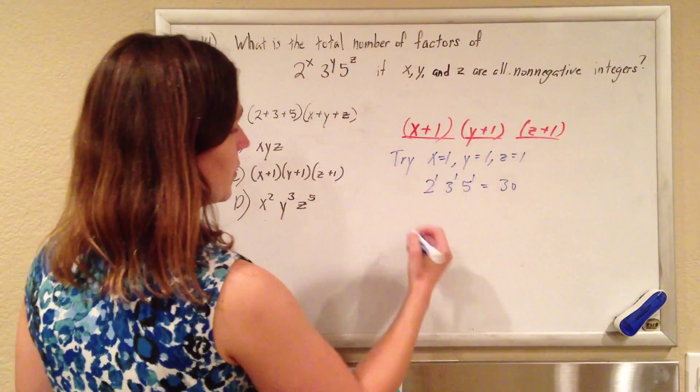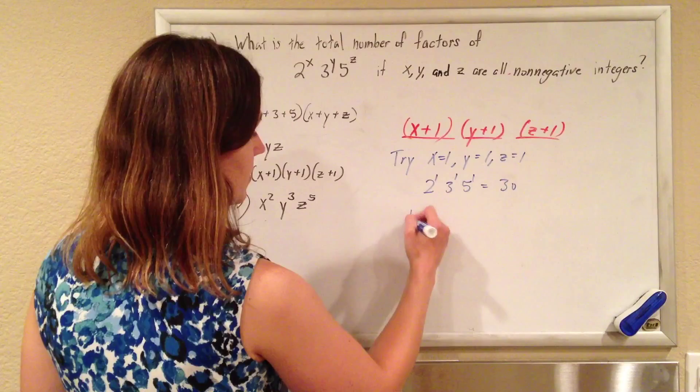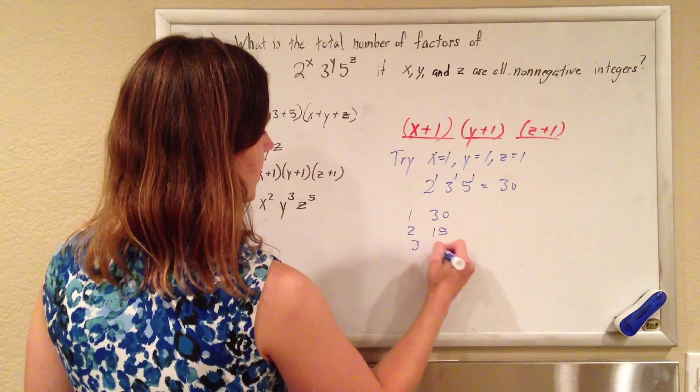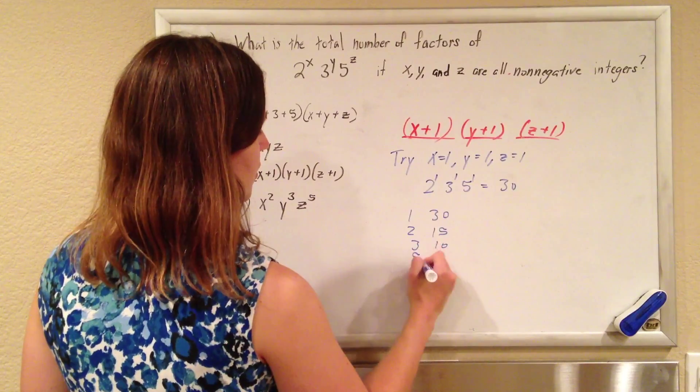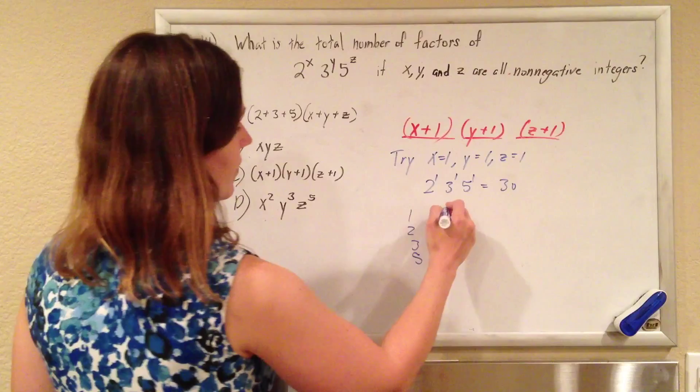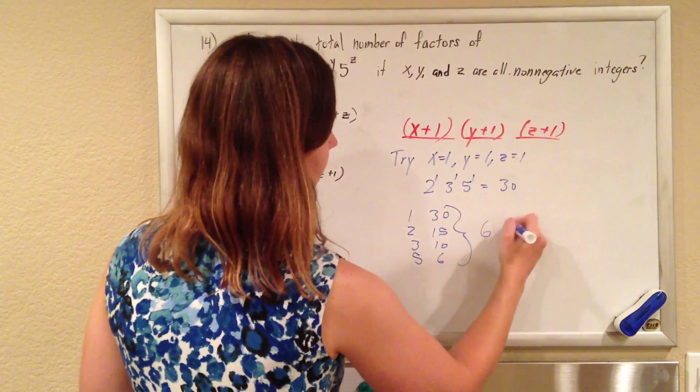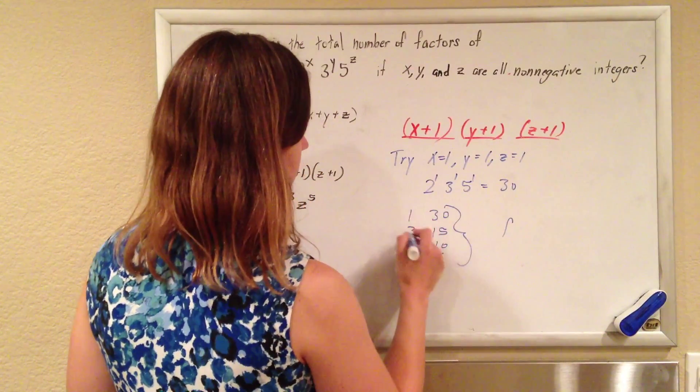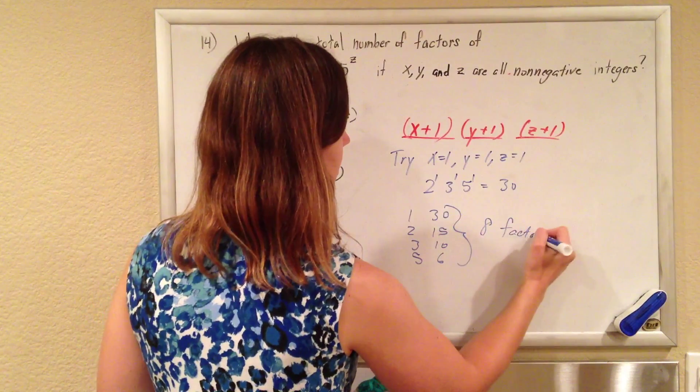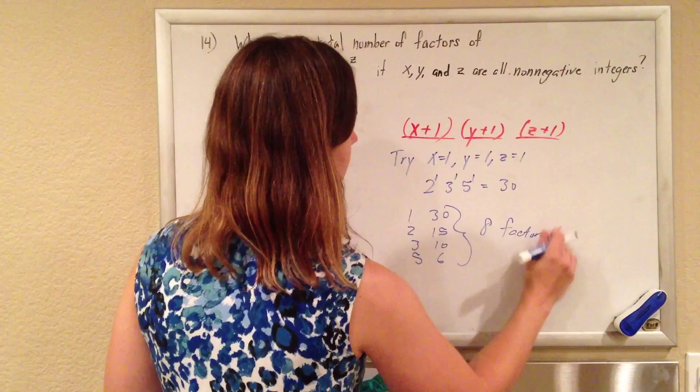So I want the total number of factors of 30. So if I start to write out the factors of 30, I could have 1 and 30, 2 and 15, 3 and 10, 4 doesn't go, but 5 goes, and then 6 goes, and I start to repeat. So these are all the factors of 30. I have 1, 2, 3, 4, 5, 6, 7, 8 factors of 30.